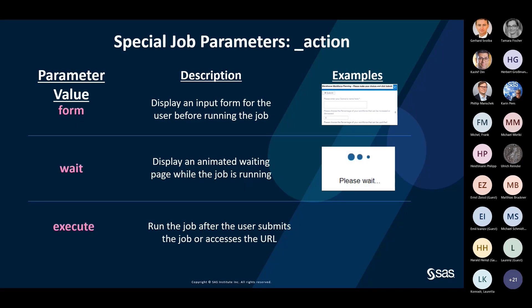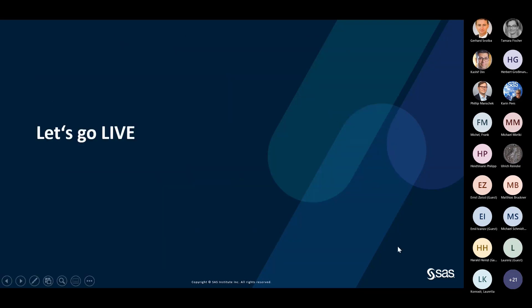The third special parameter is underscore debug, which displays the SAS log after the job runs. The action parameter can take multiple values: 'form' displays an input form for the user before the job runs; 'wait' displays an animated waiting page while the job is running; and 'execute' runs the job after the user submits it or accesses the URL. With that, let's look at a live example.